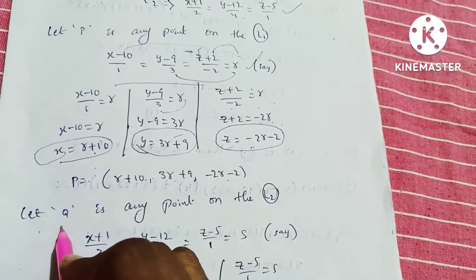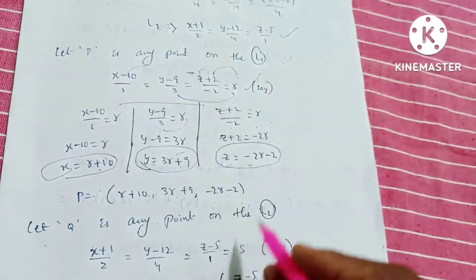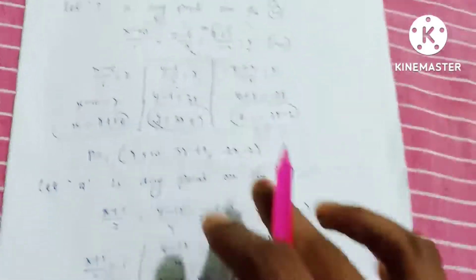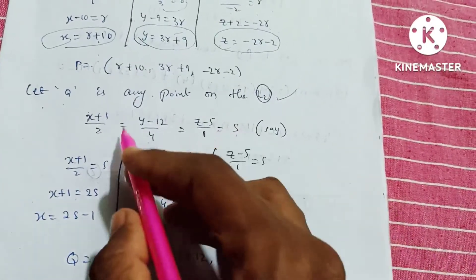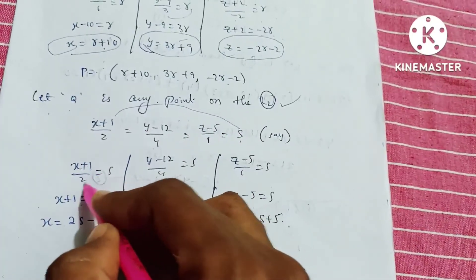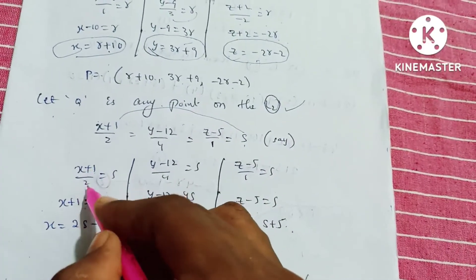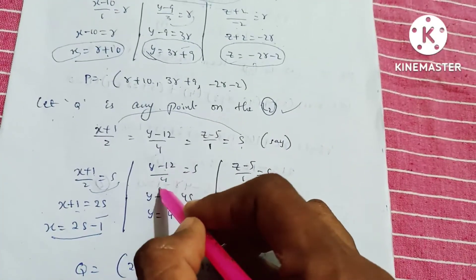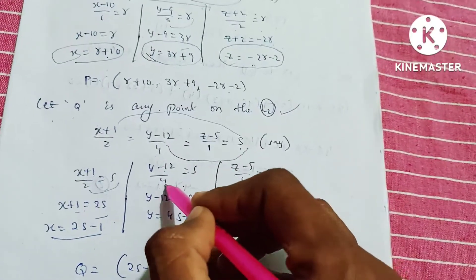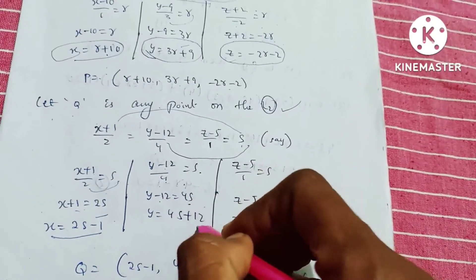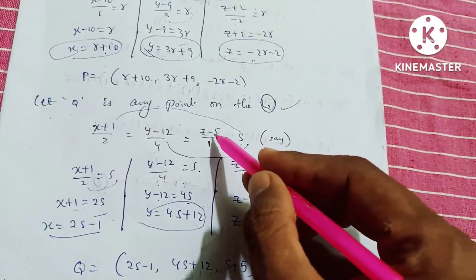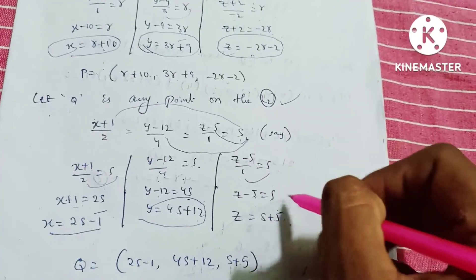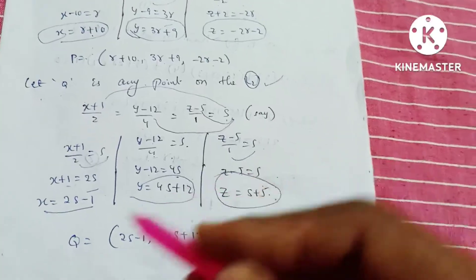Let Q be any point on line 2. Line 2: x plus 1 by 2, y minus 12 by 4, z minus 5 by 1. Let the parameter equal s. So x plus 1 by 2 equals s, giving x equals 2s minus 1. Then y minus 12 by 4 equals s, giving y equals 4s plus 12. Then z minus 5 by 1 equals s, giving z equals s plus 5. So Q equals (2s−1, 4s+12, s+5).